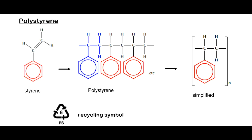Polystyrene is also well known — we use it as a shock absorber especially in packaging material. The monomer used to make polystyrene is called styrene. The styrene molecule has two carbons in a chain with a double bond, like ethene, but one hydrogen is replaced by a benzene ring. When styrene undergoes polymerization, the repeating unit is shown in blue and the simplified macromolecule is represented in brackets. The recycling symbol for polystyrene is number six.